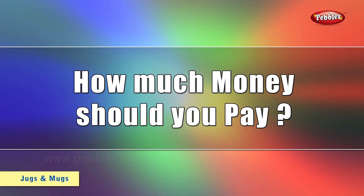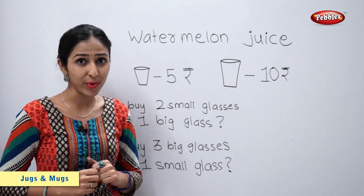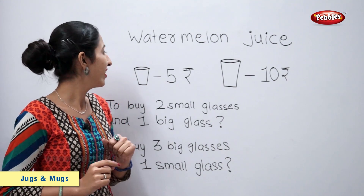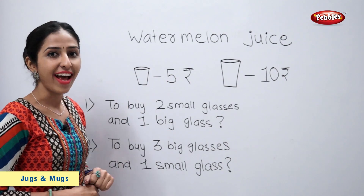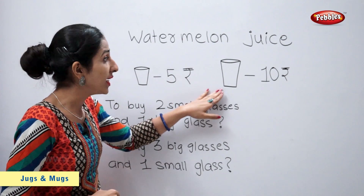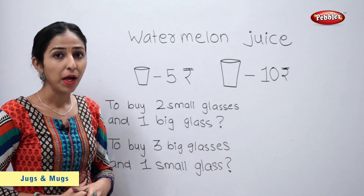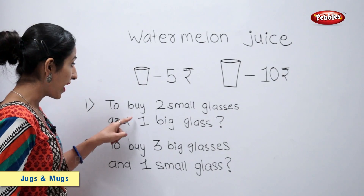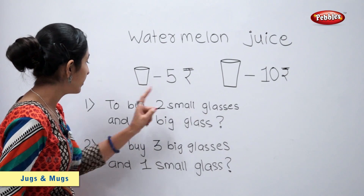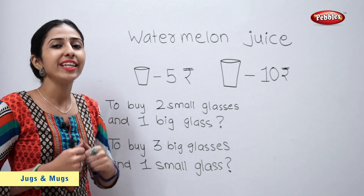How much money should you pay? My students put up a watermelon juice stall in the school. They sold a small glass of juice for 5 rupees and a big glass of juice for 10 rupees. Based on this, answer these questions: To buy 2 small glasses and 1 big glass, how much money will you need to pay?